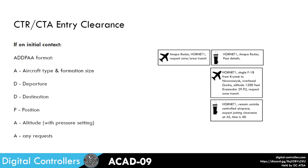Now let's look at the control zone or control area entry clearance. We typically have this pass-details loop where the aircraft gives their call sign and their message effectively being their request. So for example, if it's a control zone entry clearance, Aparadar Hornet 1 requests zone transit, then they're asked to pass their details. When passing their details they use the ADDPAA format: aircraft type and formation size, departure aerodrome, destination aerodrome, current position, altitude with pressure setting, and their request.